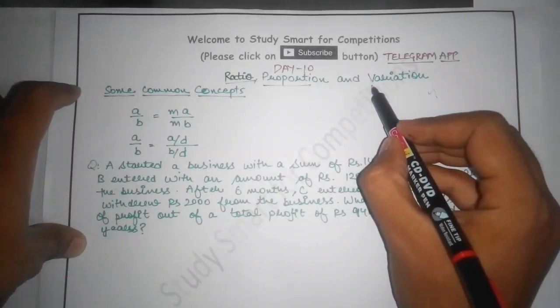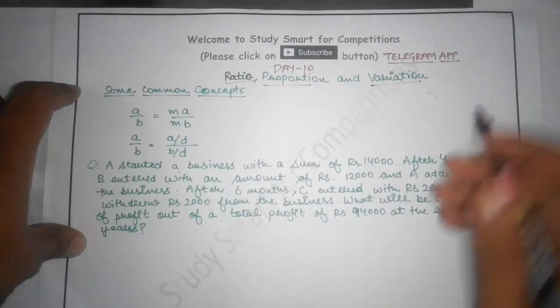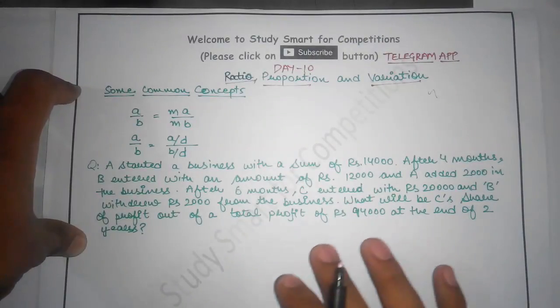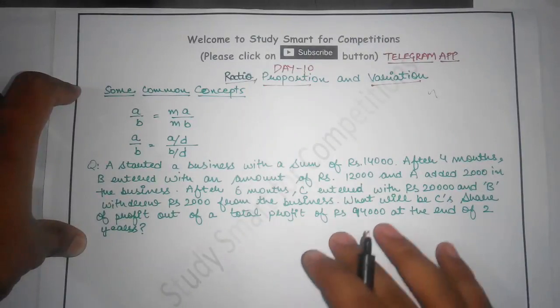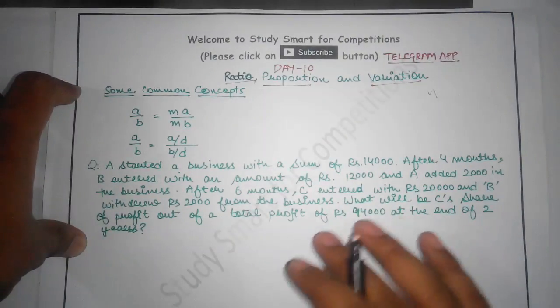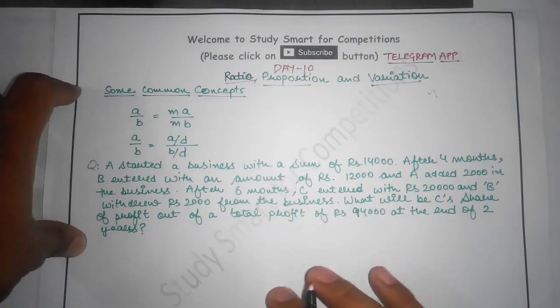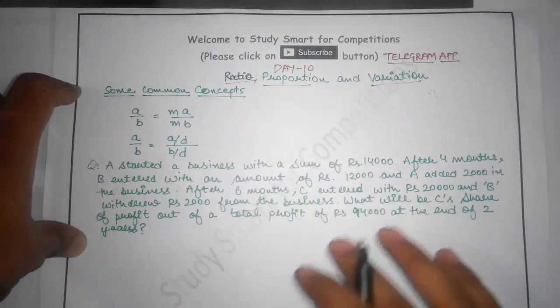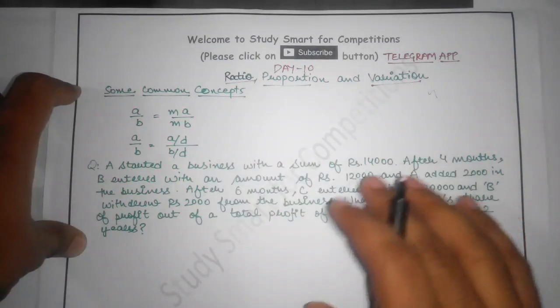It is also an important topic. You can expect 1-2 questions from this topic in IBPS from ratio, proportion and variation.